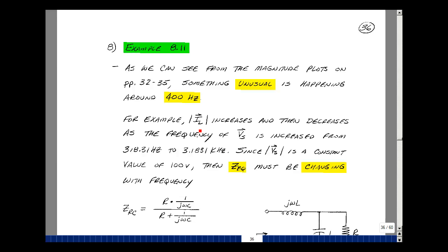For example, the magnitude of the current I increased and decreased as we varied the frequency of V_s from 318.31 Hz to 3.1831 kHz. Now, the magnitude of V_s is constant, and so if the current coming in from the voltage source is changing, that means the impedance must be changing with frequency. Of course, it can because of the inductance and the capacitance.